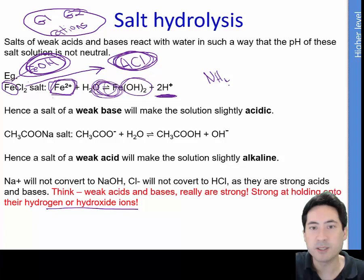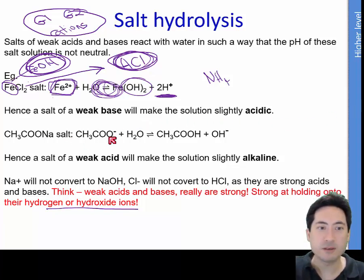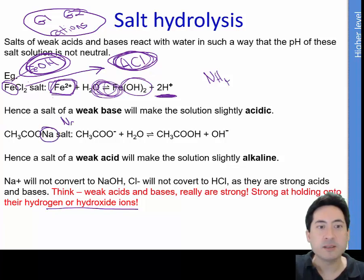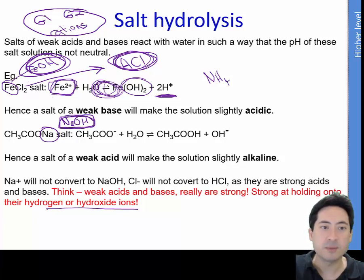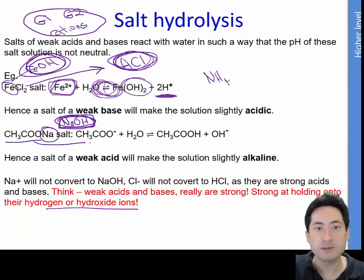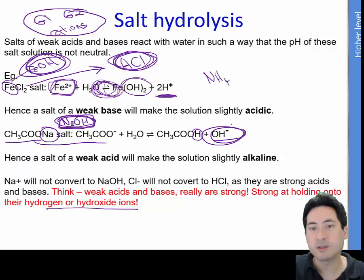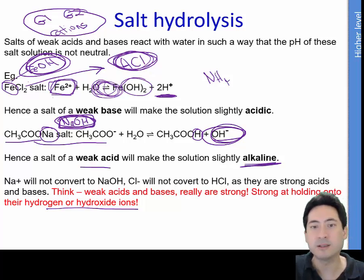Don't forget ammonium — that's also a base that will do the same thing. Weak acids will also do something similar. You need to recognize the strong base will not recombine — it strongly dissociates. But ethanoic acid is weak, so it will combine with water. If it takes a hydrogen ion back, that creates hydroxide ions, and so weak acids create solutions that are slightly alkaline.